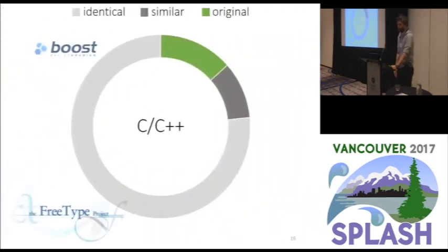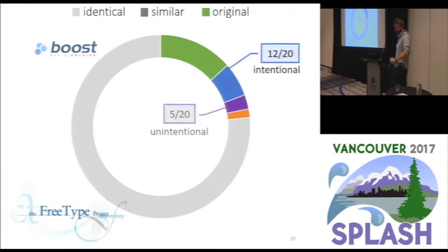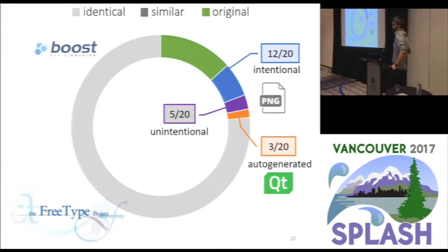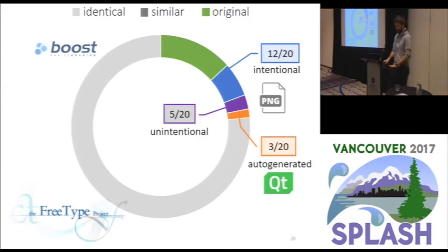Moving to C and C++, the most famous libraries were Boost and FreeType. Splitting similar files into the same categories, auto-generation was not much of an issue — only three, mostly from Qt. We found a couple of unintentional ones, mostly different library versions. We found quite a lot of intentional ones: people copy-pasted entire files including comments, changing them ever so slightly to work with their own version of the code.